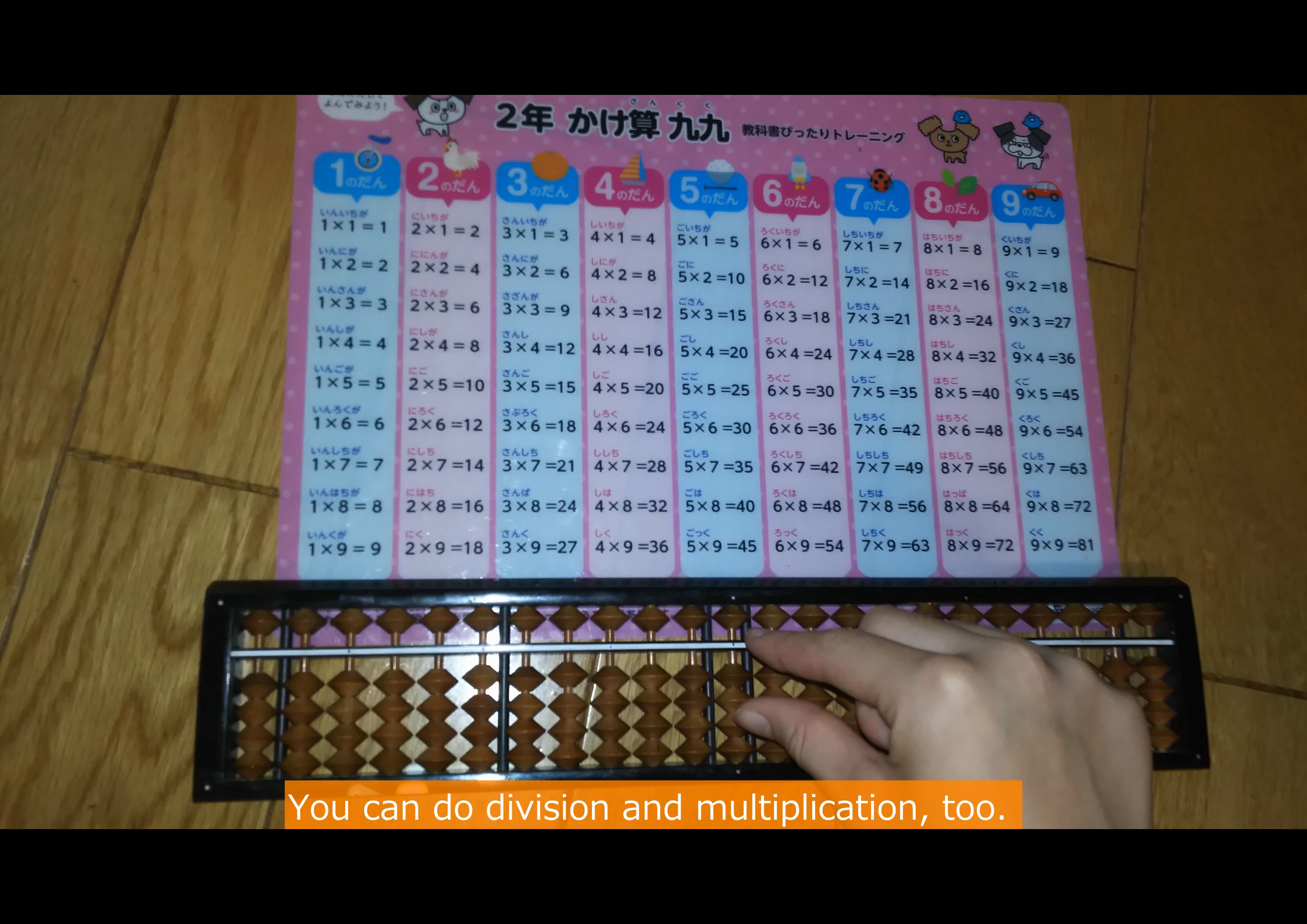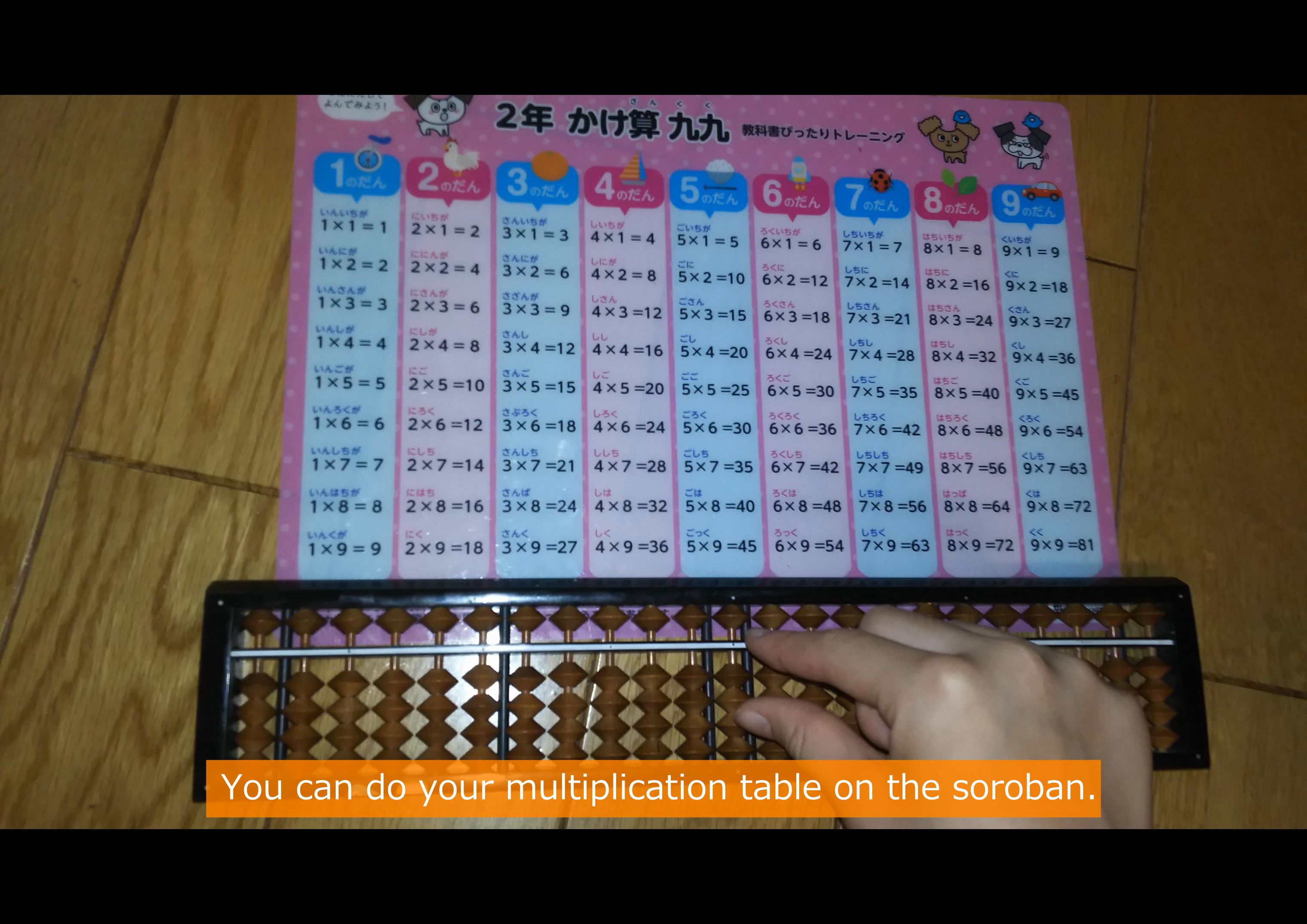You can do division and multiplication too. You can do your multiplication table on the soroban, starting at the middle of the 10's place.